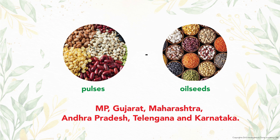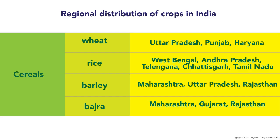There is also regional distribution of crops in India. Regarding cereals: wheat is mainly cultivated in Uttar Pradesh, Punjab, and Haryana. Rice is cultivated in West Bengal, Andhra Pradesh, Telangana, Chhattisgarh, and Tamil Nadu. Barley is mainly grown in Maharashtra, Uttar Pradesh, and Rajasthan.